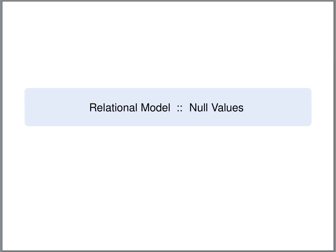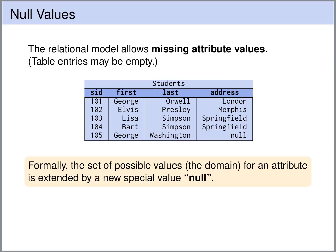We've seen before that a relational model allows special values NULL. So the relational model allows missing attribute values. We can leave table cells empty, and this is indicated by the special value NULL. This value NULL is not part of the domain of this column.